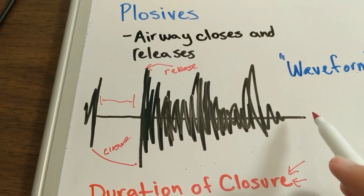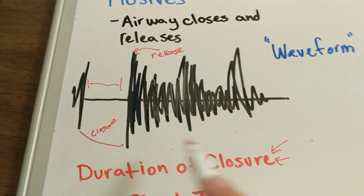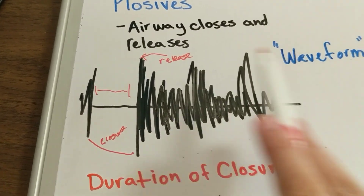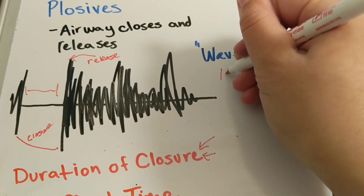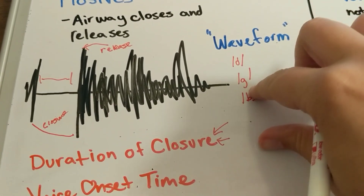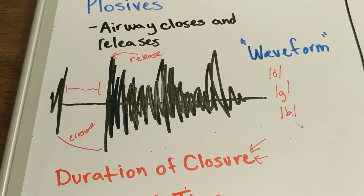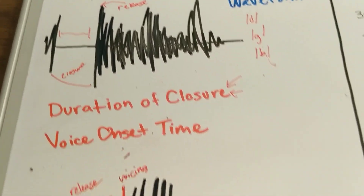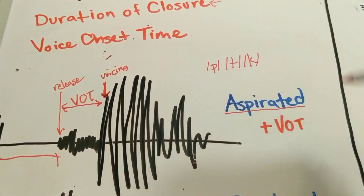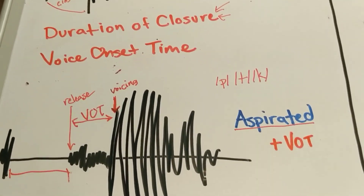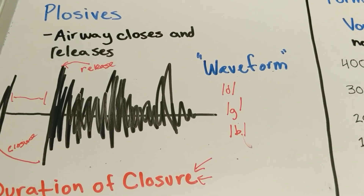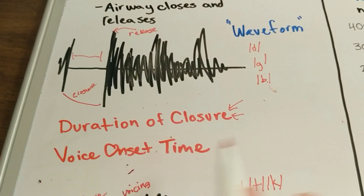Looking at the earlier plosive used to illustrate closure and release, that one has a voice onset time of zero — the moment you release it, you are producing voicing. This is usually what voiced plosives in English are like. So D, G, and B tend to have a voice onset time around zero: 'ba', 'da', 'ga'. Whereas in English, P, T, and K tend to be aspirated, so they have a positive voice onset time. When you say 'pa', 'ta', and 'ka', you can feel that puff of air. But when you say 'ba', 'da', and 'ga', you can't feel that puff of air because it all goes at once.